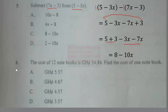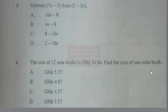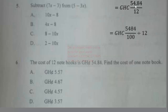Question 6: The cost of 12 notebooks is 54.84 GH₵. Find the cost of one notebook. This is a division problem: divide 54.84 by 12. We convert 54.84 to a fraction: 5484/100, then divide by 12, which means multiplying by the reciprocal 1/12.